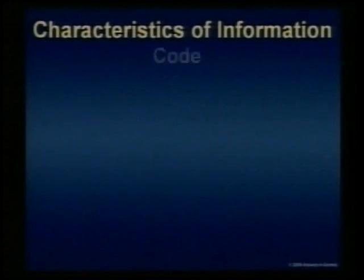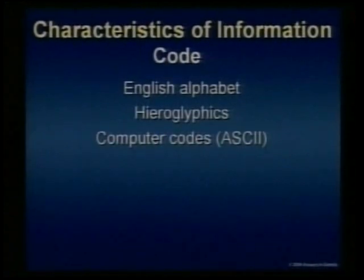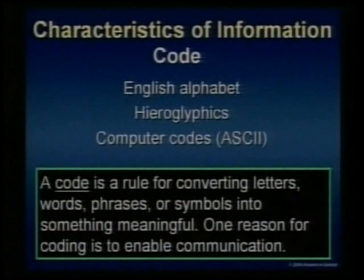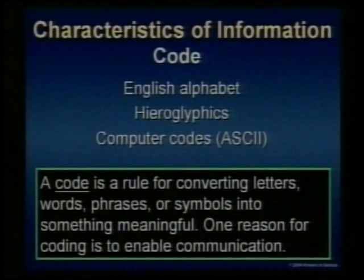So let's look at the characteristics of information. We're still building. Let's look at what information is now. Code — all information has a code. The English alphabet has a code, hieroglyphics have a code, and ASCII. All of those have codes. A code is a rule for converting letters, words, phrases, or symbols into something meaningful. One reason for coding is to enable communication. That's one of the attributes or characteristics of information.